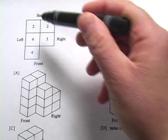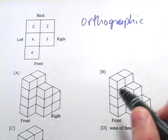And you can see they've labeled this the front, the right, the back, and the left. That's an orthographic projection.